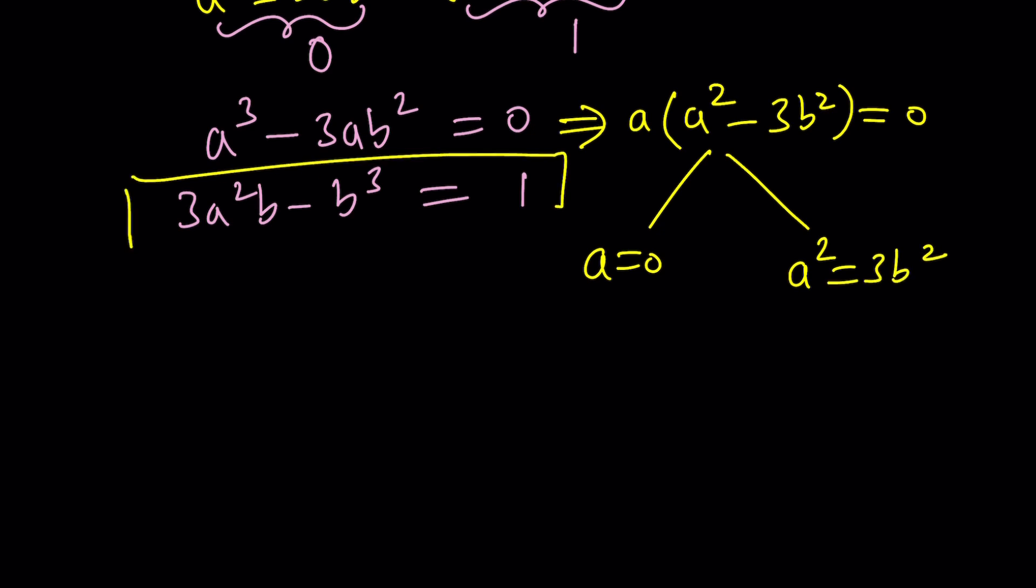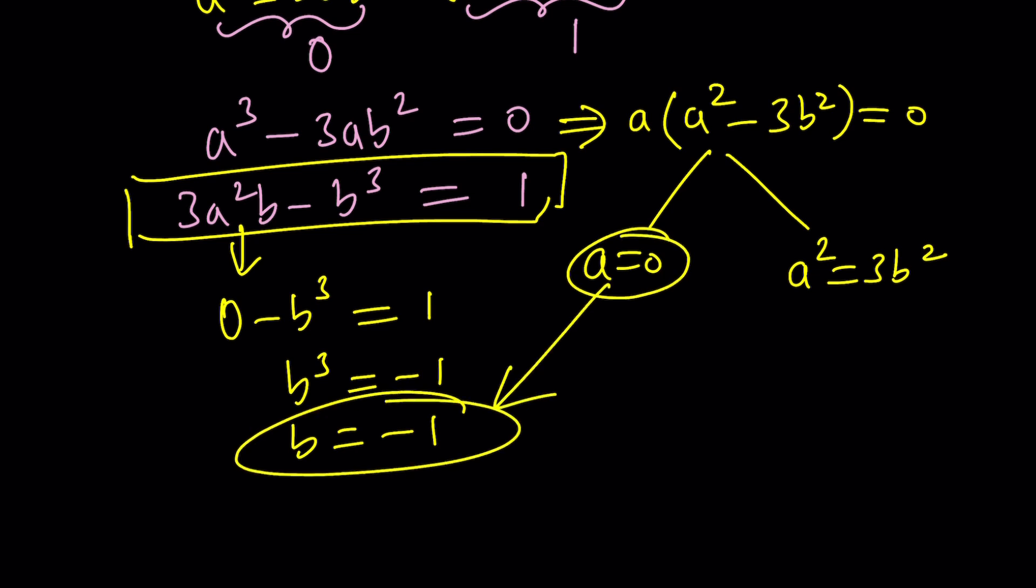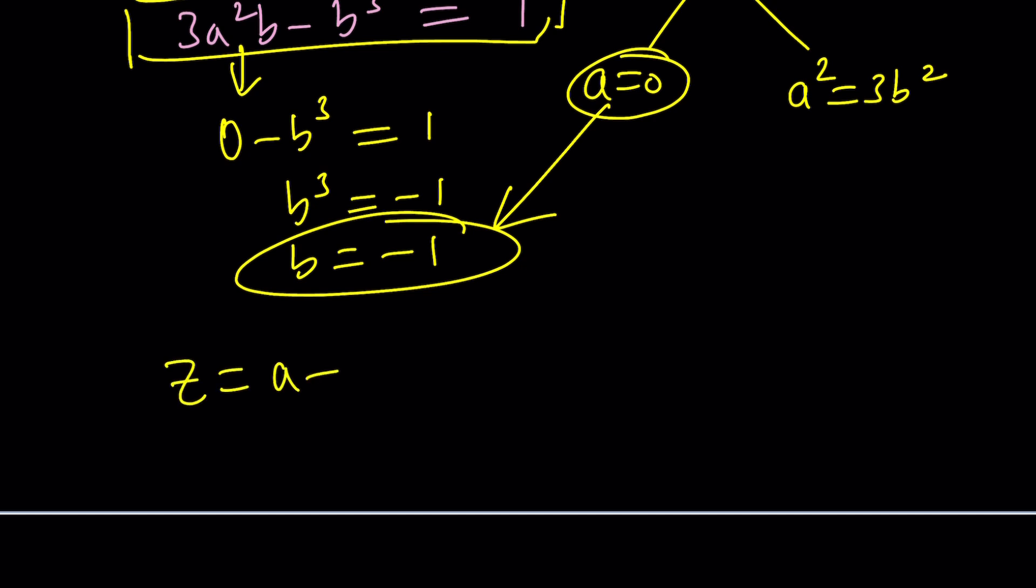And we can actually use that result here. If a is 0, then we get 0 - b³ = 1. And we get b³ = -1 and b = -1. Remember, b is a real number. A is a real number. So a = 0 gives us b = -1, which means z is a + bi, and that gives us -i. This should make sense, right? I mean, i³ is -i. Negative i cubed is i. So it satisfies the equation. It's one of the solutions.